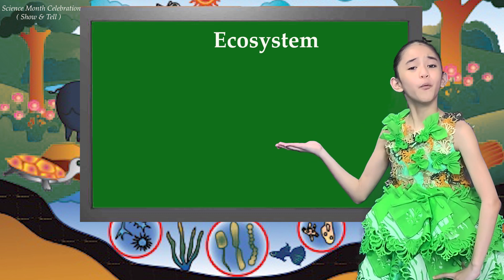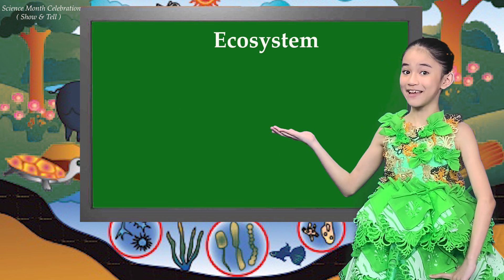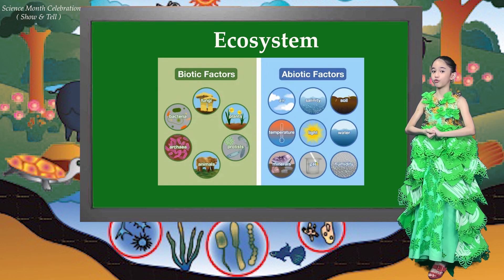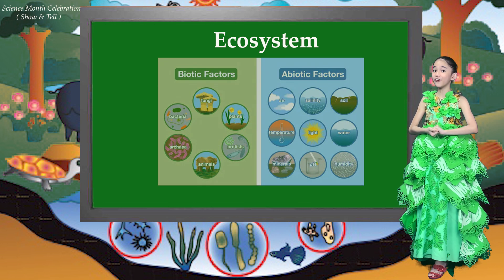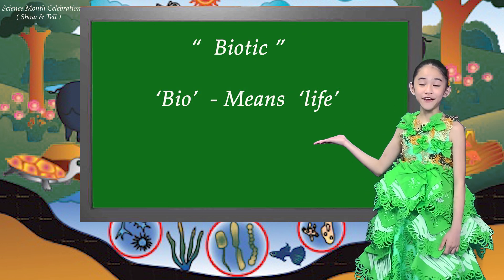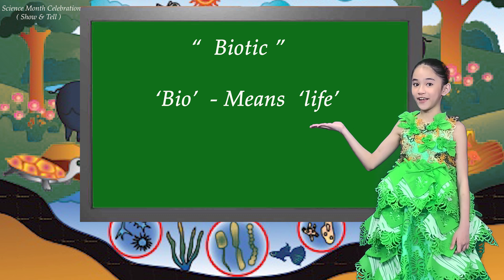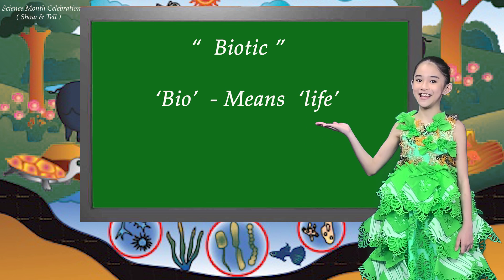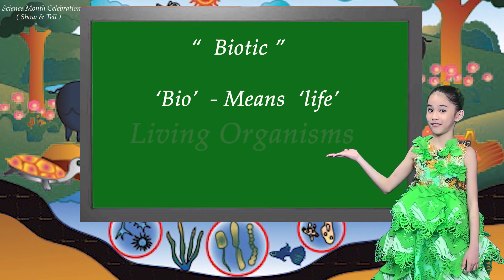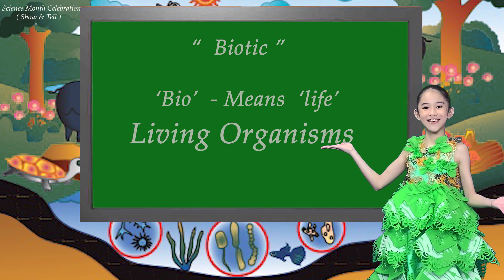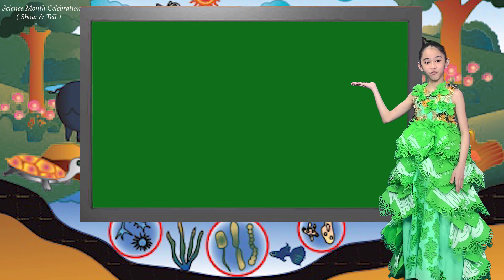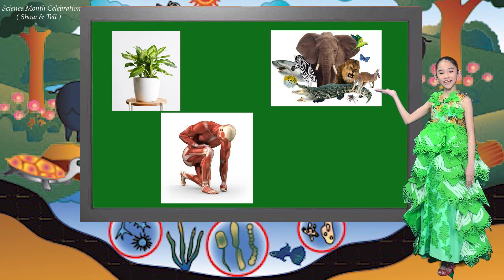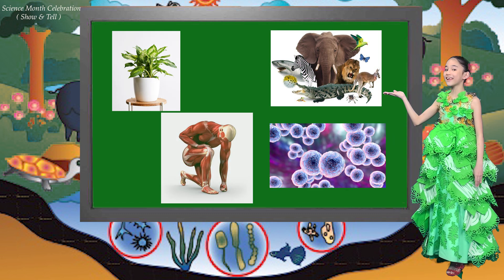But first, we need to know what an ecosystem is. An ecosystem is a community or group of biotic and abiotic components. The word bio in the word biotic comes from a Greek word which means life. Thus, biotic means living organisms. This involves plants, human beings or animals, and bacteria of the ecosystem.